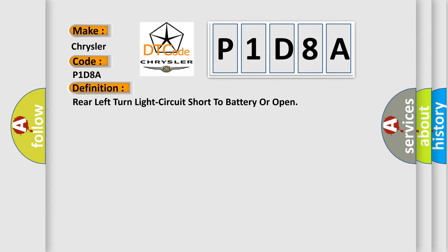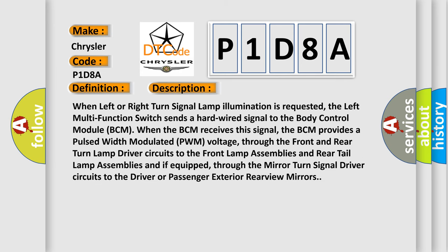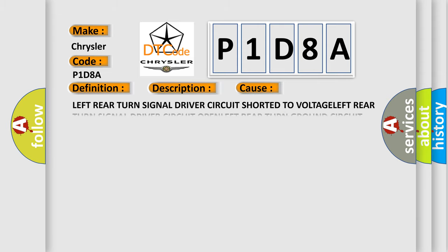When left or right turn signal lamp illumination is requested, the left multifunction switch sends a hardwired signal to the body control module BCM. When the BCM receives this signal, the BCM provides a pulsed-width modulated PWM voltage through the front and rear turn lamp driver circuits to the front lamp assemblies and rear tail lamp assemblies, and if equipped, through the mirror turn signal driver circuits to the driver or passenger exterior rear view mirrors. This diagnostic error occurs most often in these cases: left rear turn signal driver circuit shorted to voltage; left rear turn signal driver circuit open; left rear turn ground circuit open; turn signal bulb; or body control module BCM.